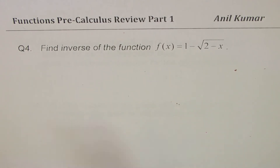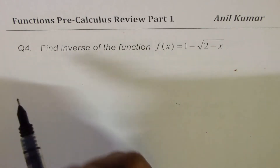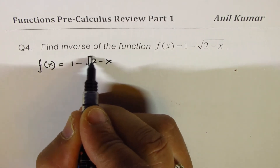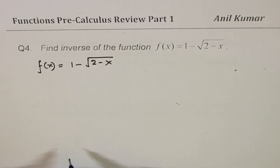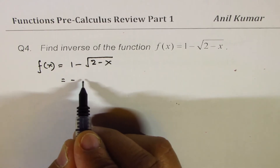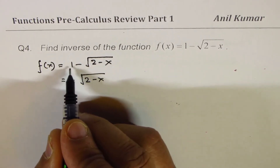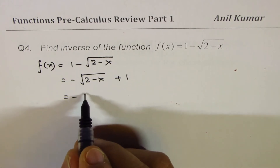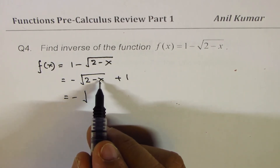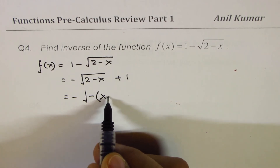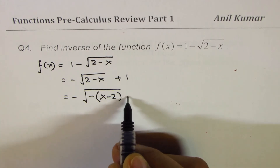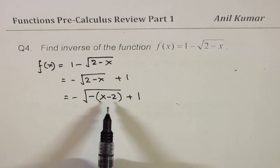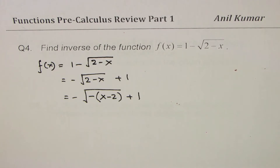Question 4: find the inverse of the function f(x) = 1 - √(2-x). The first important step is to rewrite it by factoring out the negative inside the radical: f(x) = √(-(x-2)) + 1. Many students miss this step and get the whole transformation wrong.